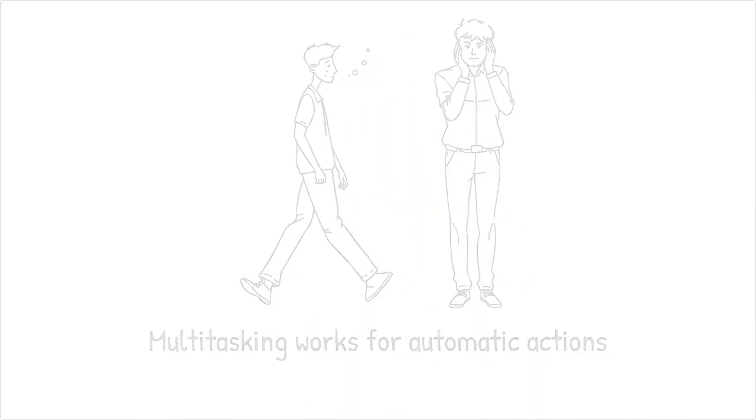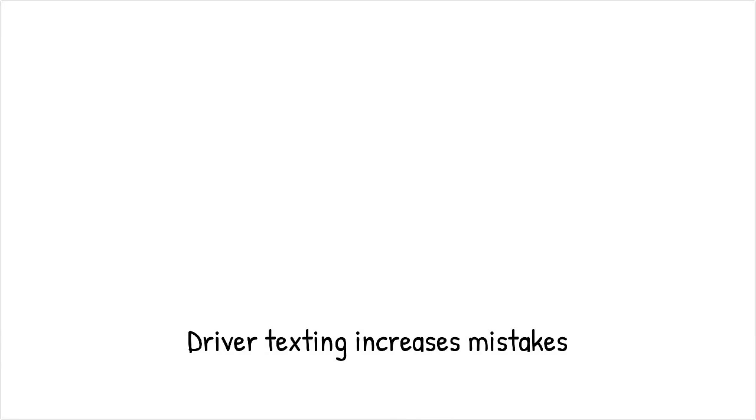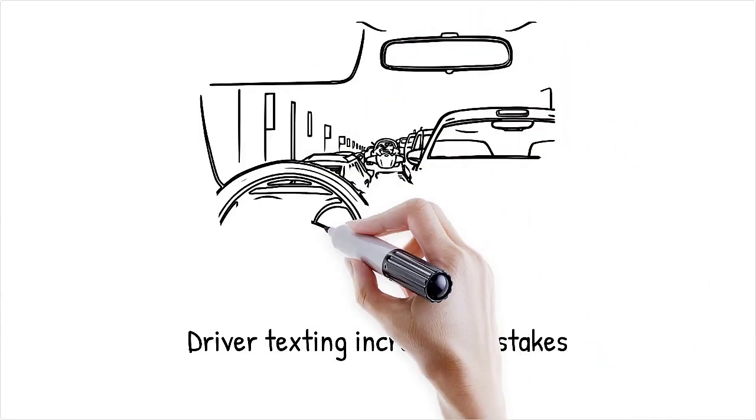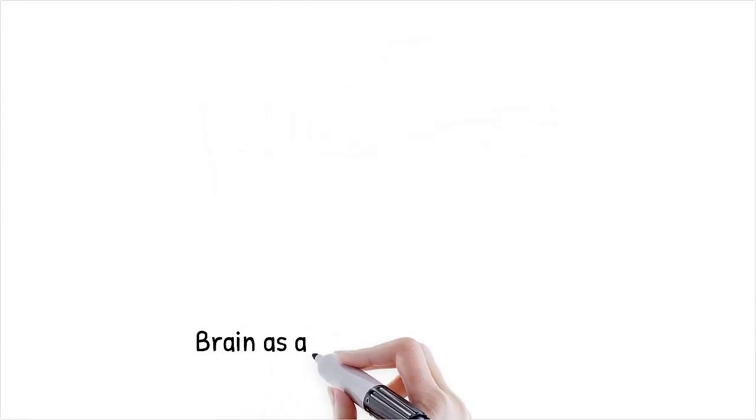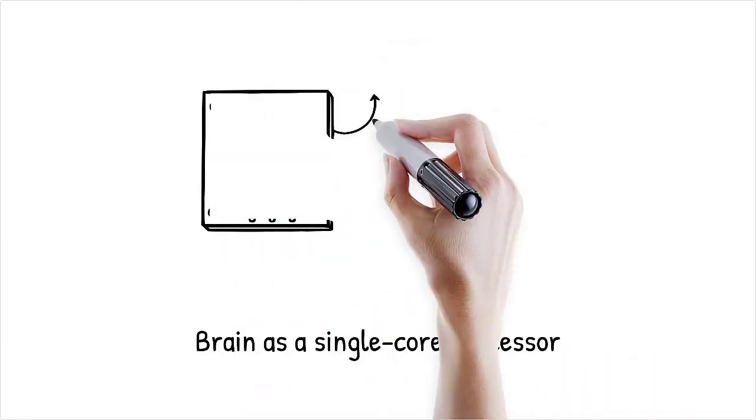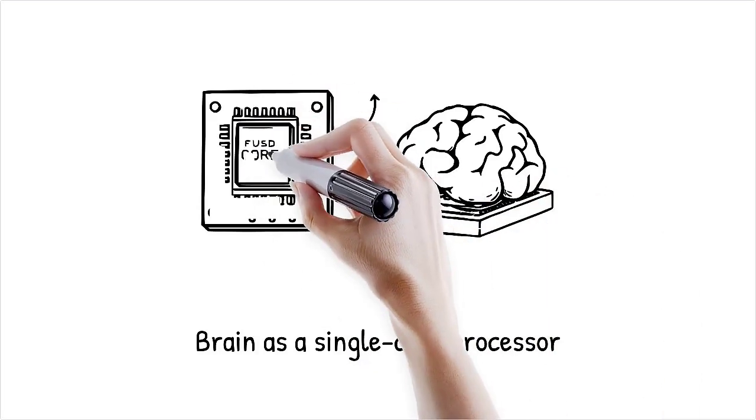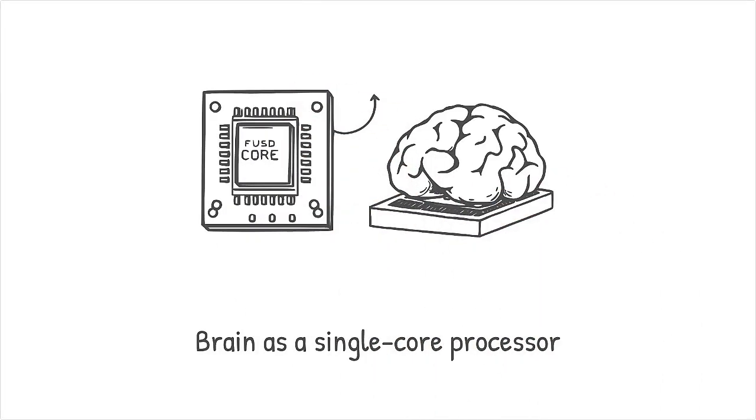A driver texting while navigating a busy road is more likely to make mistakes as their brain struggles to divide attention. The brain is like a single core processor, forcing it to juggle multiple demanding tasks slows down performance.